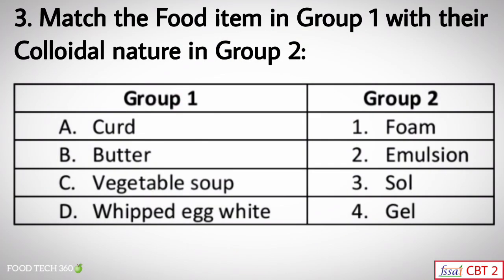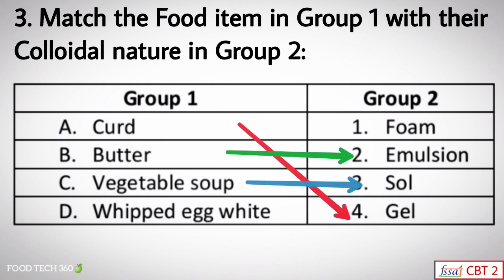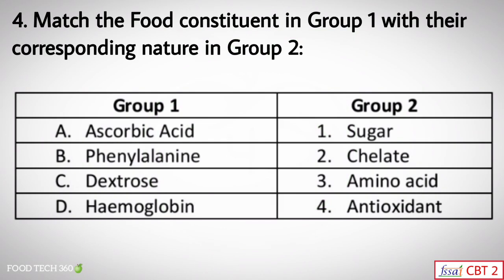Question number three: Match the food item in Group 1 with their colloidal nature in Group 2. Group 1 food items are curd, butter, vegetable soup, and whipped egg white. Group 2 colloidal natures are foam, emulsion, sol, and gel. The colloidal nature of curd is gel, butter is emulsion, vegetable soup is sol, and whipped egg white is foam.